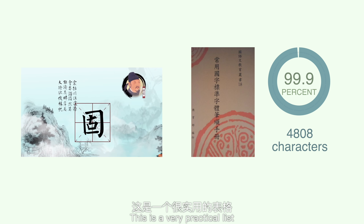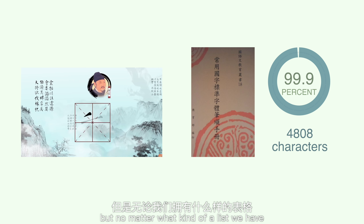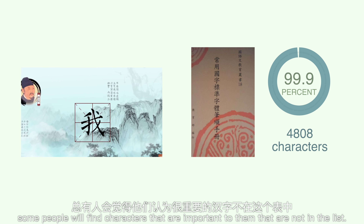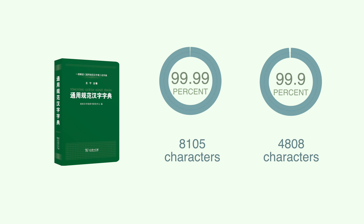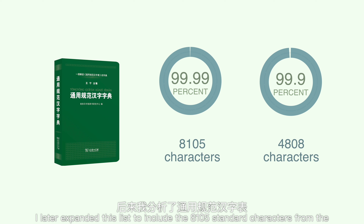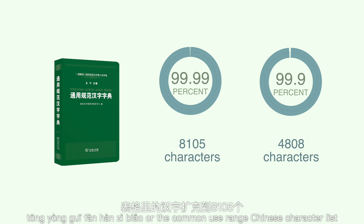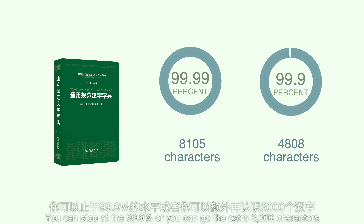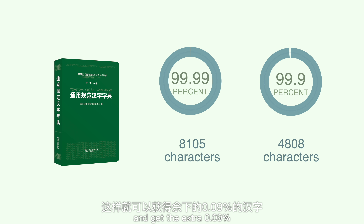This is a very practical list. But no matter what kind of list we have, some people will find characters that are important to them that are not in the list. I later expanded this list to include 8,105 standard characters from the Tong-yong Gui-fan Han-zi-biao, the Common Use Range Chinese character list, which puts the explanations at well over 99.99% coverage. You can stop at 99.9% or go the extra 3,000 characters to get the extra 0.09%.